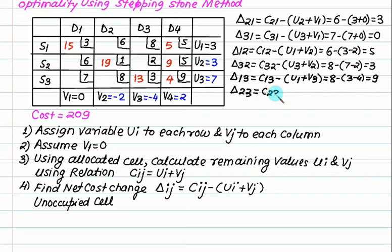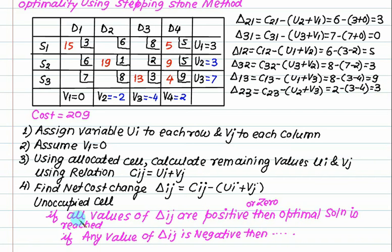Delta 23 = C23 minus (U2 + V3). C23 is 2, U2 is 3, V3 is minus 4; so 2 minus (3 minus 4) equals 3. If all values of delta IJ are positive or zero, then the optimal solution is reached. In this case all delta IJ values are non-negative, so this is an optimal solution. If any delta IJ were negative, we would discuss that procedure separately.